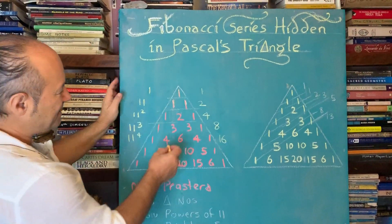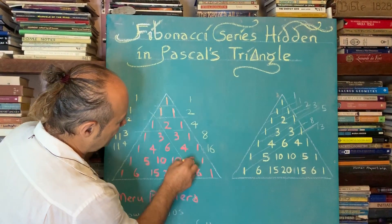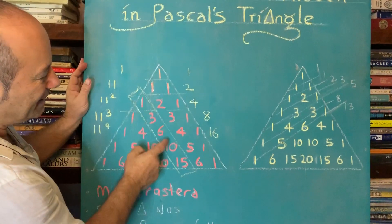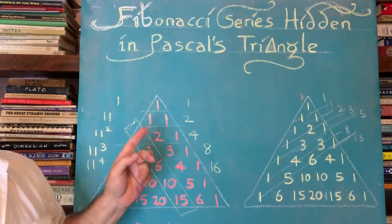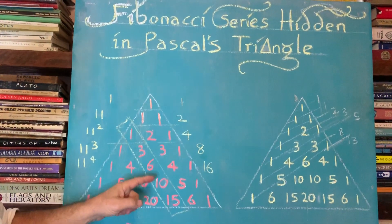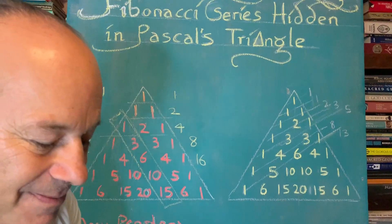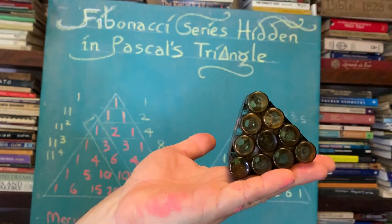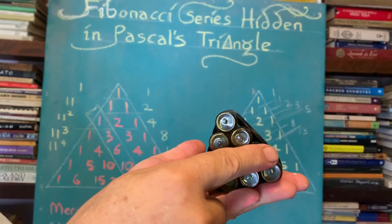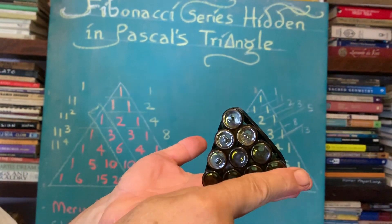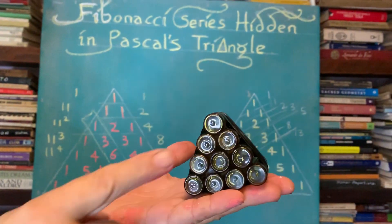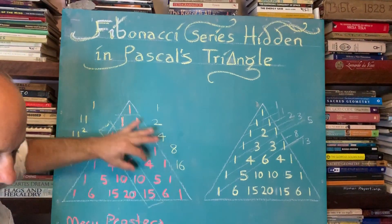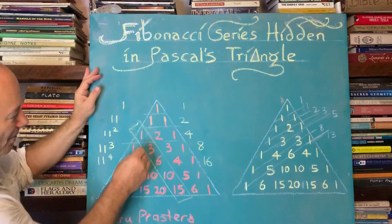There's another sequence here - I'm going to highlight it with a little rectangle around it: 1, 3, 6, 10, 15. What do you notice about that sequence? This happens to be what we call the triangular number sequence. One plus two is three, plus three makes six, plus four makes ten. So 1, 3, 6, 10 is this diagonal in the triangle.